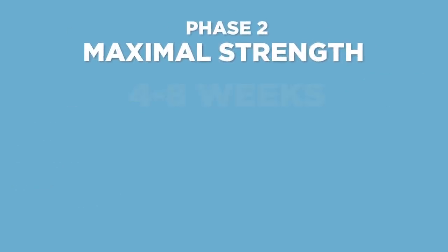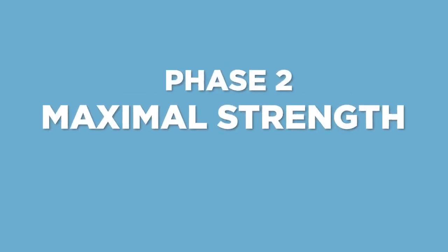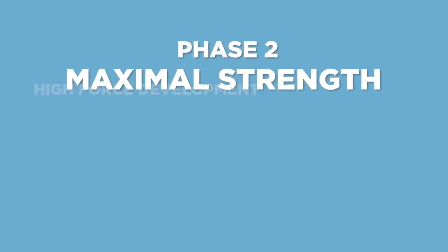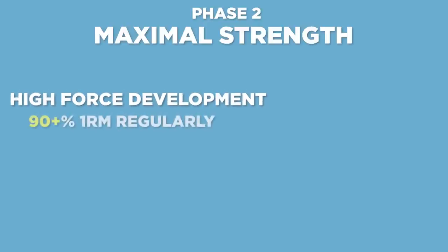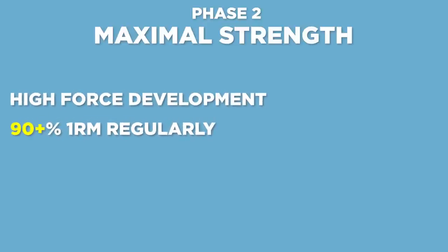Phase 2 is the development of maximum strength. It's all about strength gains — high force development is the name of the game. We want to push the athlete into 90% or slightly higher of their 1RMs for traditional heavy strength exercises. Phase 2 is all about utilizing the muscle built from phase 1. Athletes with the highest force capabilities are the ones with the highest potential to produce force across a variety of velocities.